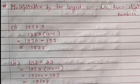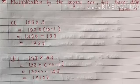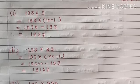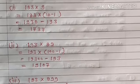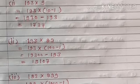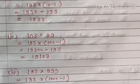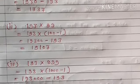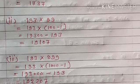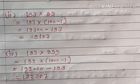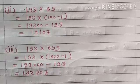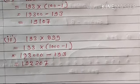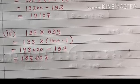Now, multiplication by the largest 1, 2, or 3-digit numbers. Example 1: 193 × 9 = 193 × (10−1) = 1930 − 193 = 1737. Example 2: 193 × 99 = 193 × (100−1) = 19300 − 193, which is easy to calculate. Example 3: 193 × 999 = 193 × (1000−1) = 193000 − 193। इस operation से हम multiply, subtraction, और addition आसानी से कर सकते हैं।